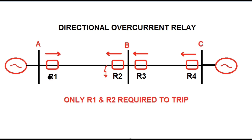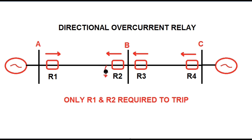In this figure we have shown three substations: substation A, B, and C. In between substation A and B there exists one single circuit line, and in between substation B and C there exists another single circuit line. R1, R2, R3, R4 are the relays. Substation A is connected with a source and substation C end is connected with another source, and a fault occurs in between substation A and B.